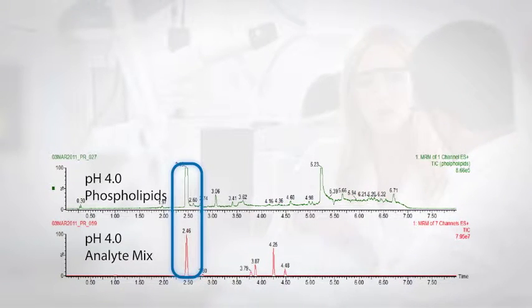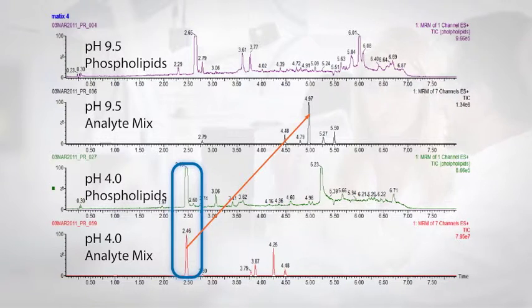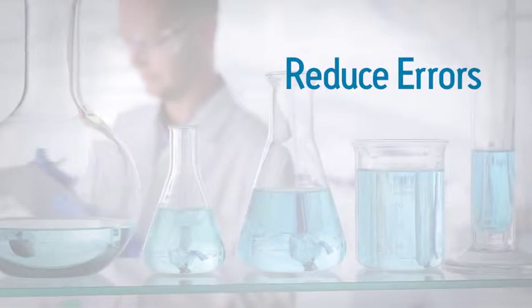In this bioanalysis example, the analyte of interest coelutes with the phospholipid interference, resulting in suppressed ionization and loss of sensitivity. When Auto Blend Plus is used to create a pH 9.5 mobile phase, the analyte is moved to later retention away from the interference, which greatly improves sensitivity. Using Auto Blend Plus reduces errors in preparation of the mobile phases, making your preparation easier, more reliable, and more accurate.